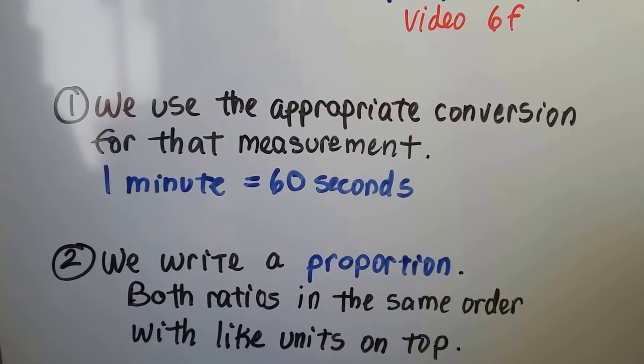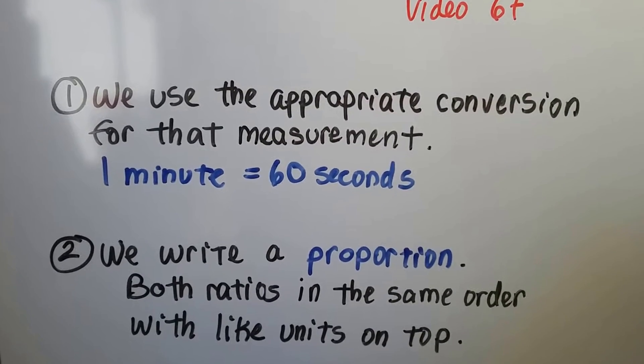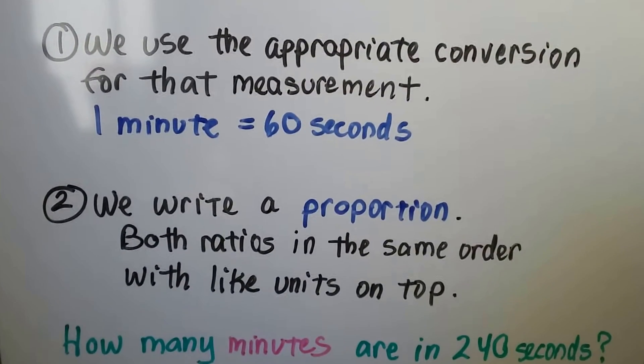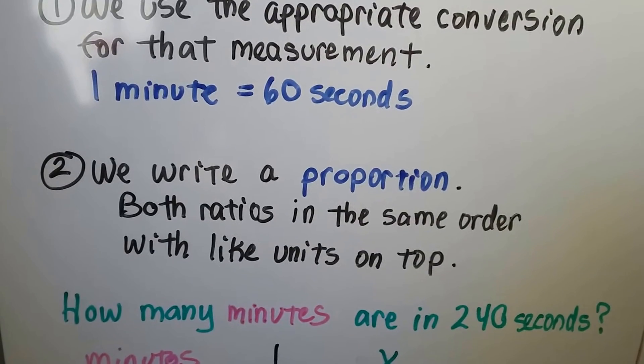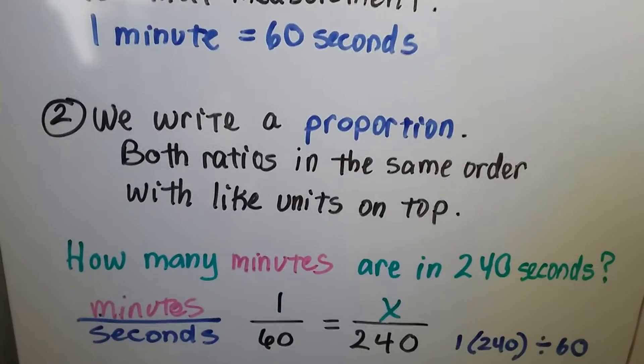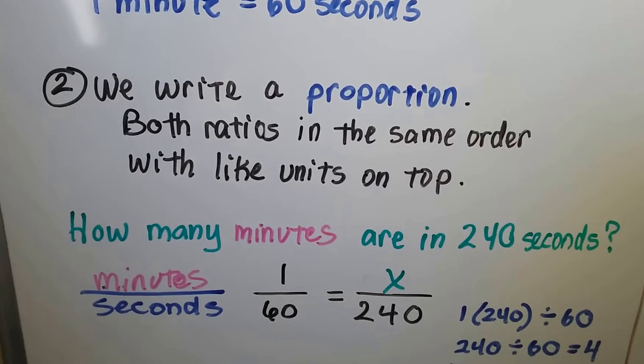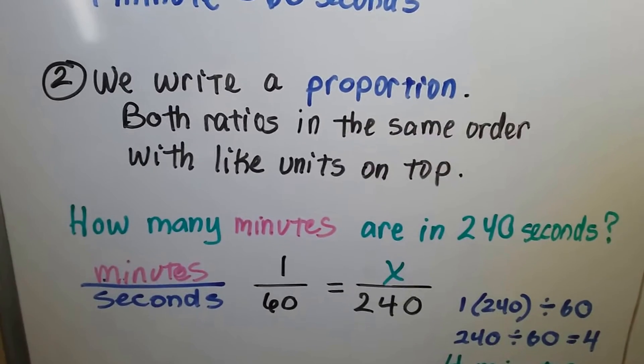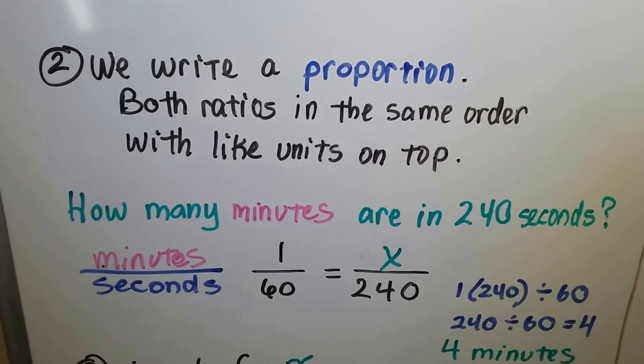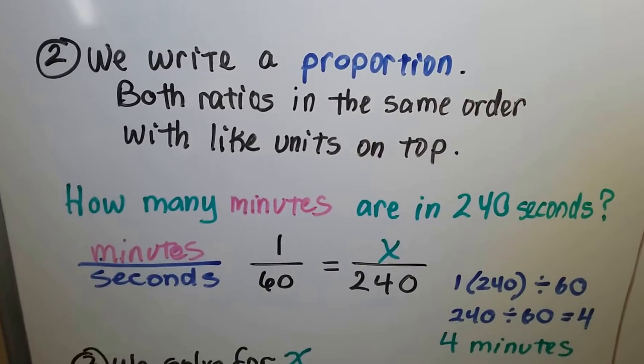We use the appropriate conversion for that measurement. One minute equals 60 seconds. We write a proportion, both ratios in the same order with the like units on top. Because this one says how many minutes are in 240 seconds, we're looking for minutes. So minutes is going to be the numerator and seconds will be the denominator.